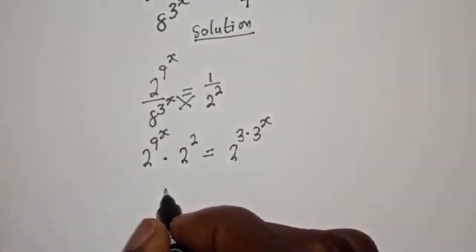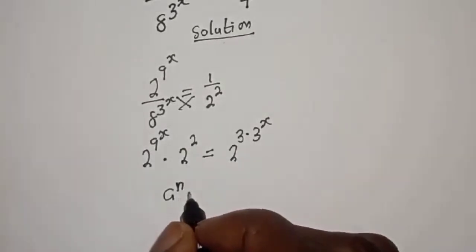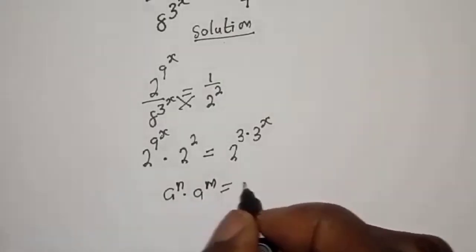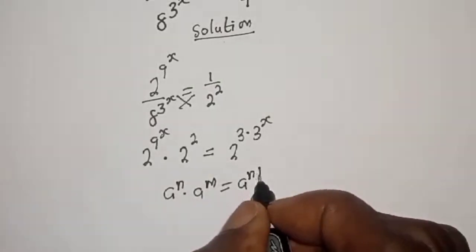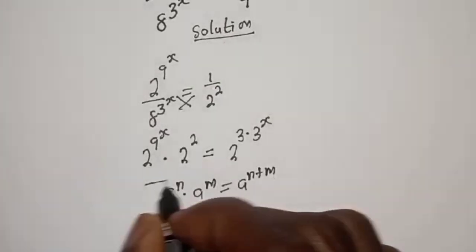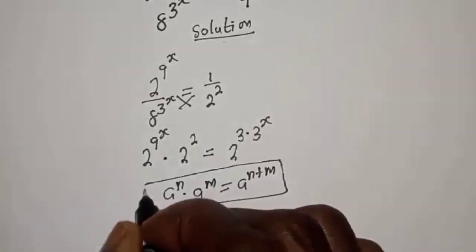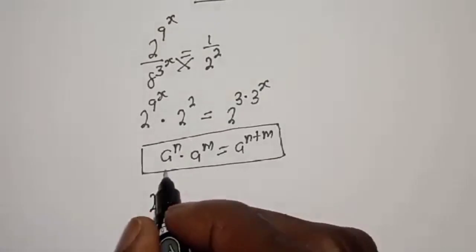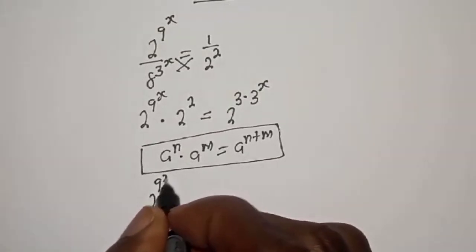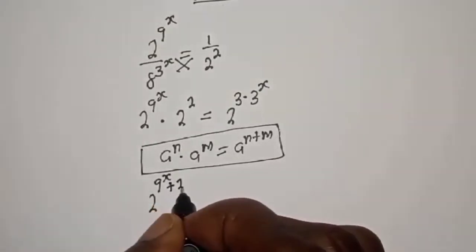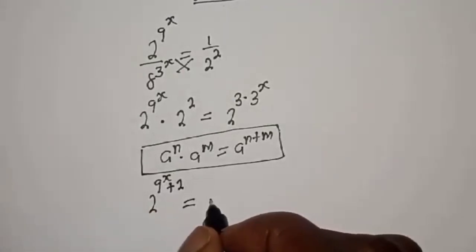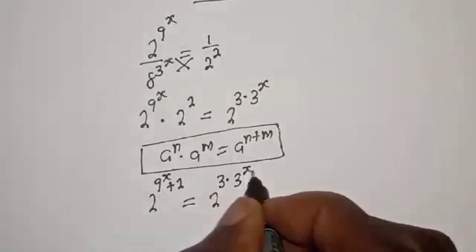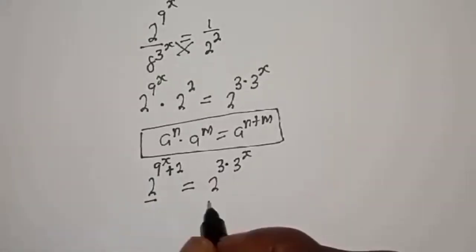Take note that if you have a raised to power n, multiplied by a raised to power m, this is equal to a raised to power n plus m. So here we have 2 raised to power 9 raised to power s plus 2, is equal to 2 raised to power 3 multiplied by 3 raised to power s. We have the same base 2.